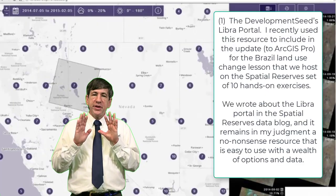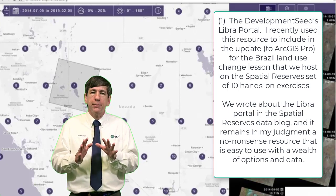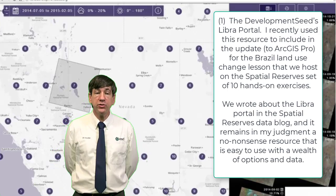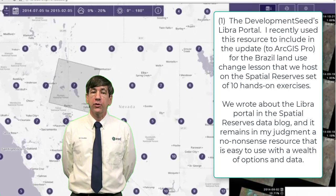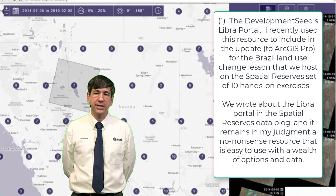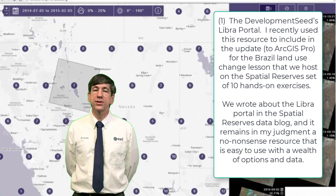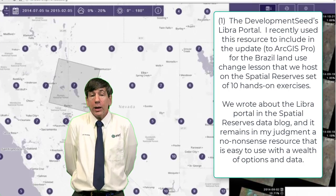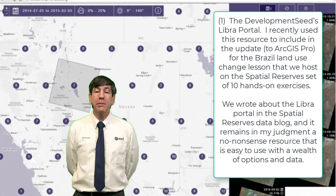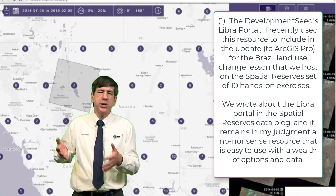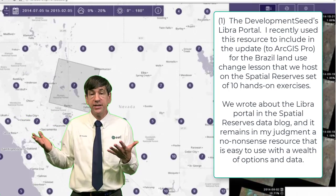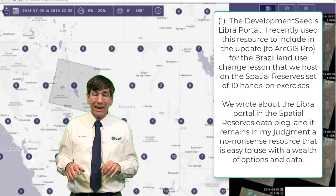Let's start with number one: the Development Seeds Libra portal. I recently used this resource for the ArcGIS Pro Brazil Land Use Change lesson that we host on the Spatial Reserves set of 10 hands-on exercises. It worked really well. We wrote about the Libra portal, and it remains, in my judgment, a no-nonsense resource that's easy to use with a wealth of options and data.